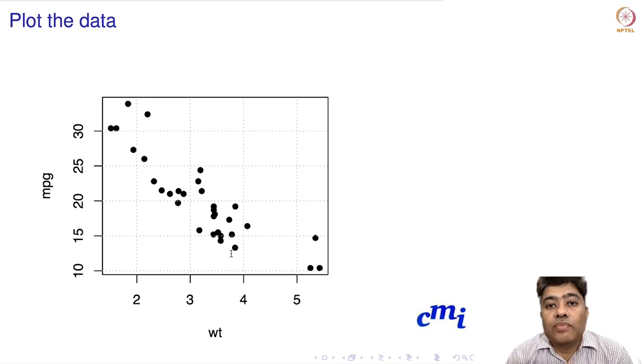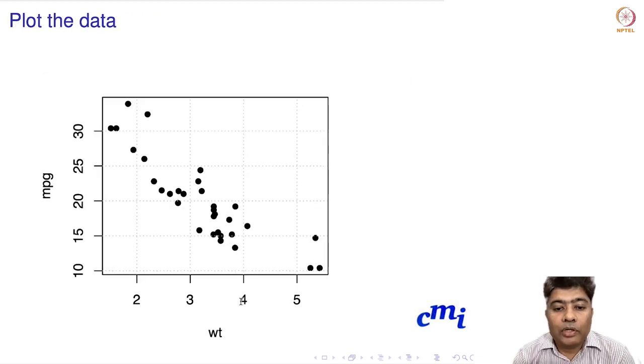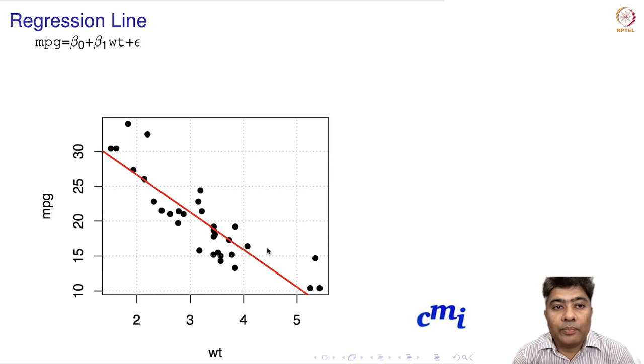Like any data science project, we start with visualization. We take the weight variable and miles per gallon and plot them. We see that as the weight of the car increases, the miles per gallon decreases—a negative relationship.